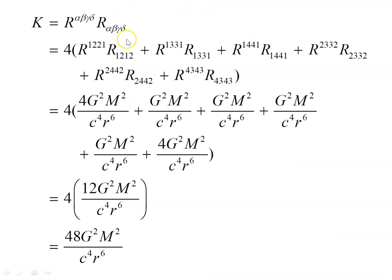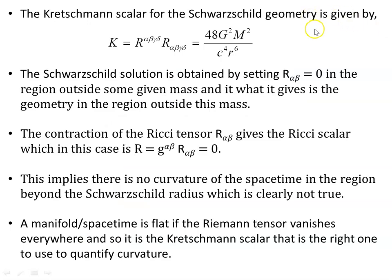For the Kretschmann Scalar, instead of writing out all 256 terms, we only need the non-zero ones and multiply each by four, since there are four versions of each. Substituting in the six product values found on the previous slide and multiplying by four, we obtain the familiar Kretschmann Scalar for the Schwarzschild geometry: K = 48G²M²/c⁴r⁶, which is this finite value. This remains finite at the Schwarzschild radius.